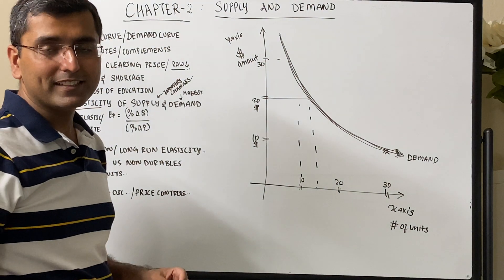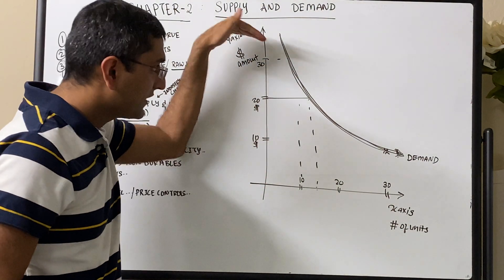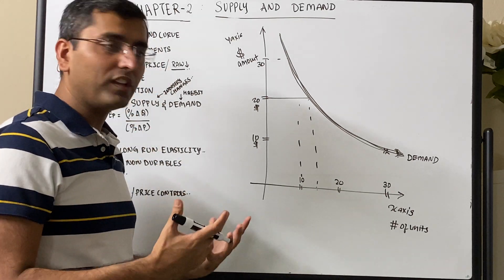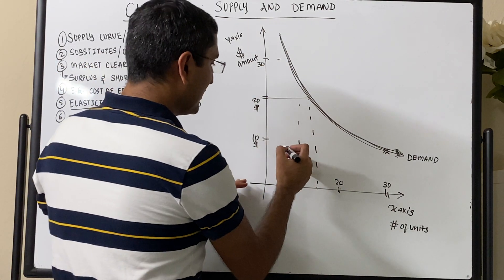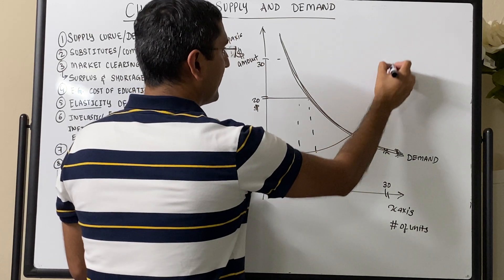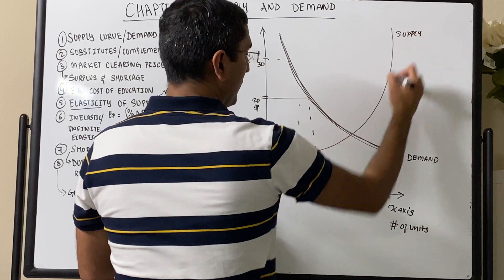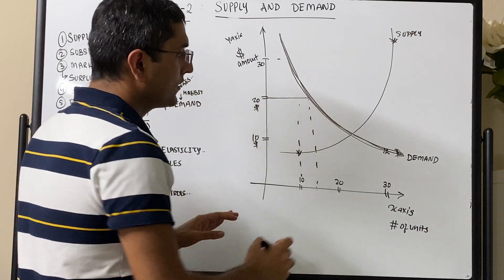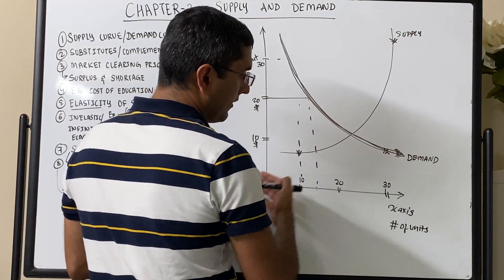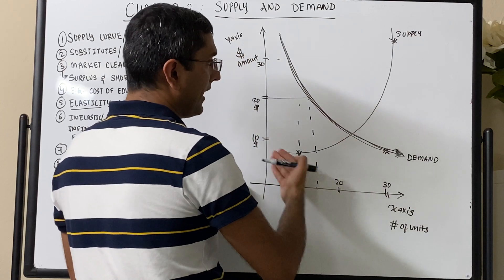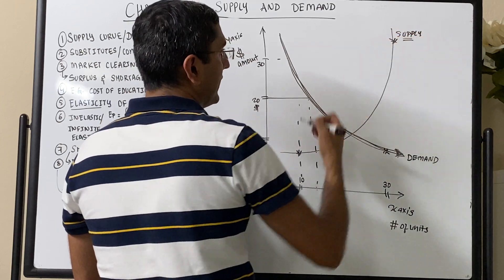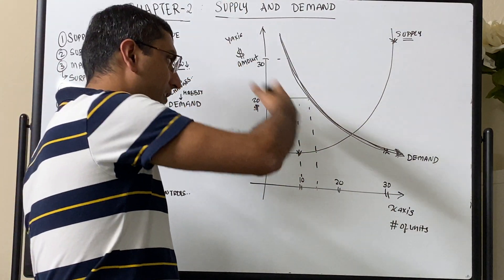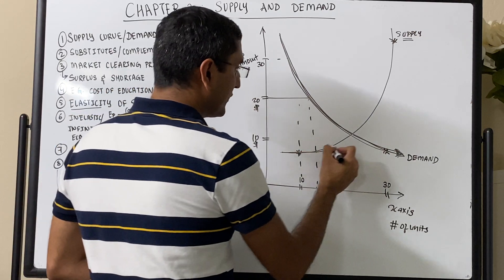The supply curve is the curve of the producers. There are consumers wanting to consume more and producers who want to build and produce more things, but it takes more money to produce more things. So typically the supply curve goes upward — if you want to produce 30 items, it takes more money versus producing 10 items. Demand goes high with more units for lower price; supply cost goes up if you want to create more units.